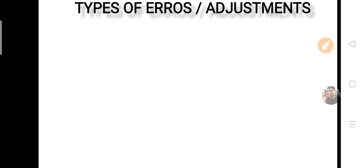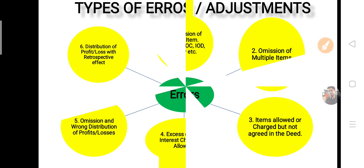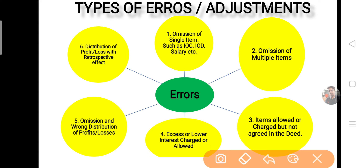अब let's categorize the various types of errors। इन six categories से बाहर board examination में कोई question नहीं आता। पहला type: omission of single items — जैसे सिर्फ interest on capital, या सिर्फ commission, या सिर्फ salary — केवल एक item भूला हो।